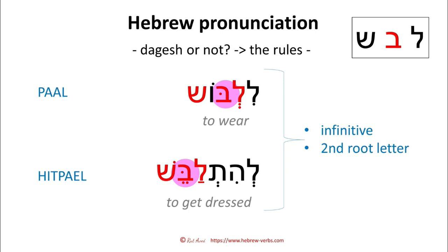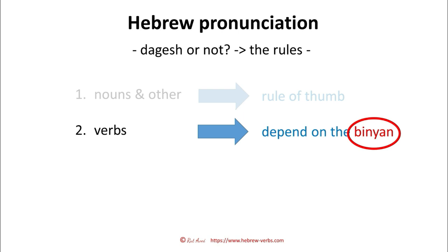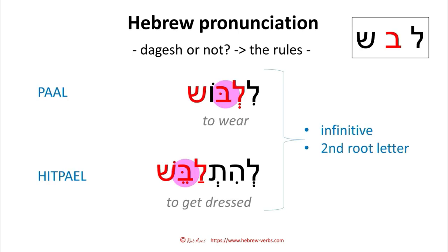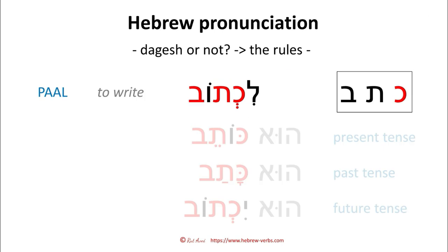That means there is a change in Paal: before we didn't have a dagesh when talking about the first root letter, but on the second root letter we do put a dagesh. In Hitpael there is no change — we had a dagesh before and we still have it on the second root letter too. So the question of dagesh or not, when it comes to verbs, does not only depend on the binyan — it also depends on the tense and on the root position. Here we were talking about the infinitive, and depending on whether it is the first or second root position, there is a dagesh or not.